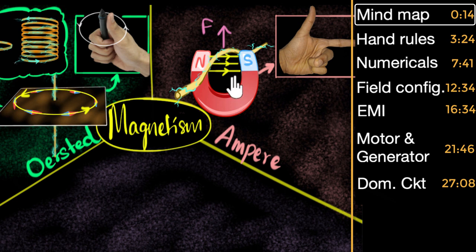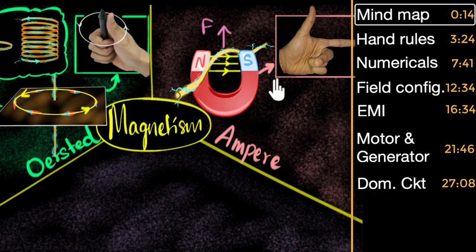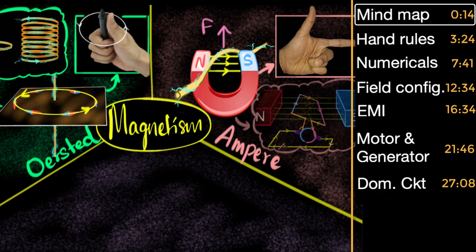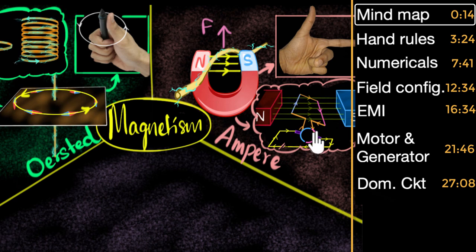This has huge numbers of applications because now we have a way to push current carrying wires by using magnets. The most robust application is found in motors, where magnetic fields are used to turn current carrying coils. This is what happens in your fans or in washing machines, etc.